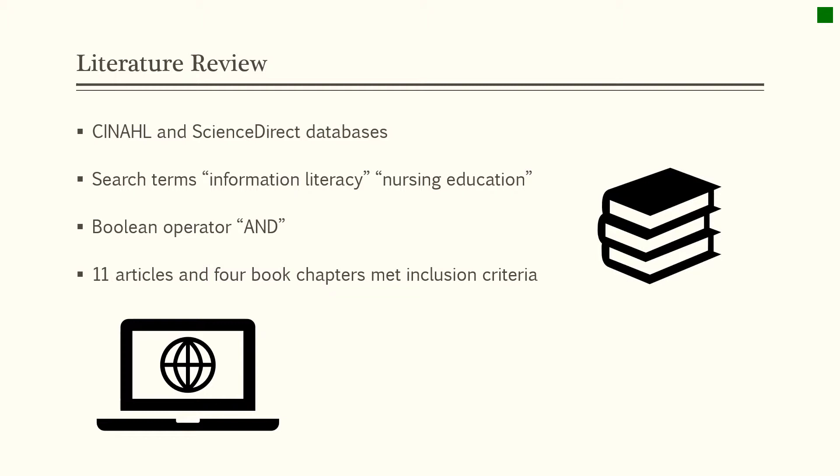Higher education and professional standards for nursing oblige nurses to practice based on the most current evidence available. To assess this, it is necessary to identify stakeholders, consequences if not attained, and existing resolutions. I conducted a literature review using the CINAHL and Science Direct databases with the search terms 'information literacy' and 'nursing education' using the Boolean operator AND. This produced 64 results in CINAHL and 2,710 in Science Direct. Inclusion criteria included review articles, research articles, book chapters, and practice guidelines published from 2013 to the present, in the United States, with full text availability in English and application to nursing education. I selected 11 articles and four book chapters for in-depth evaluation.